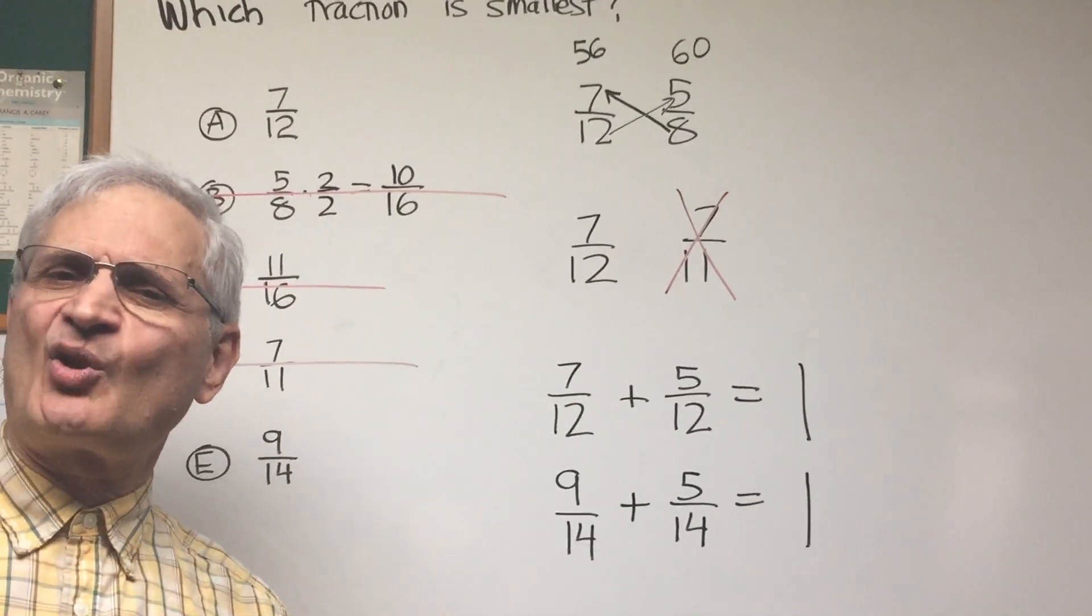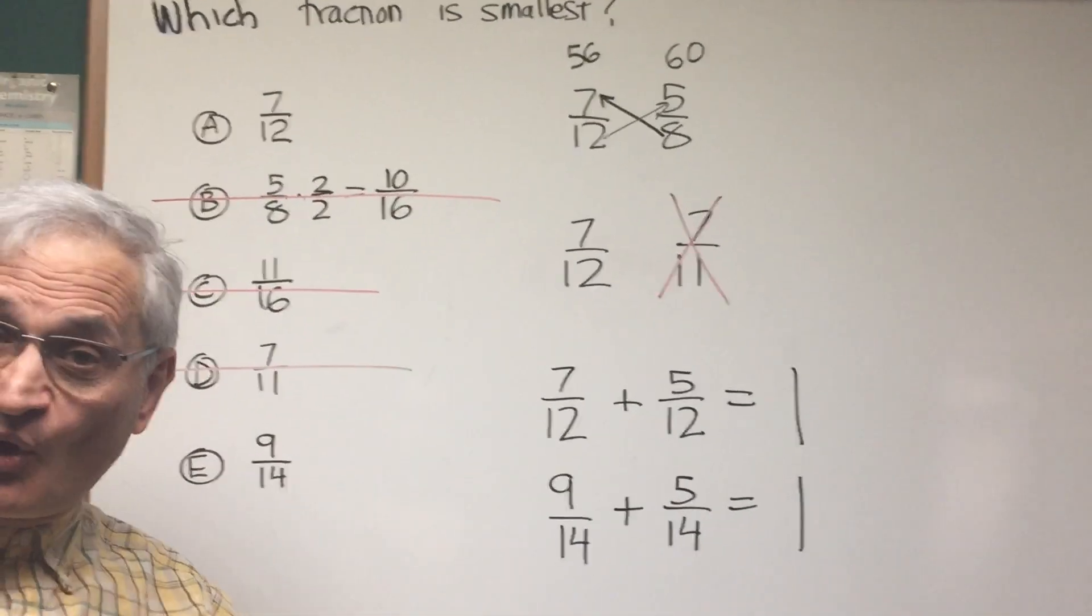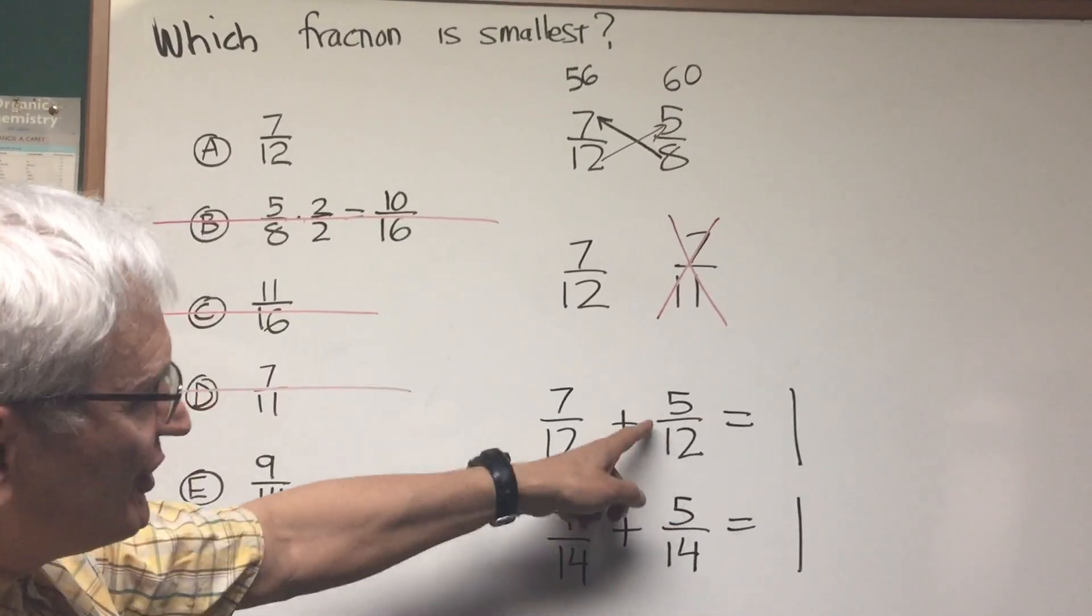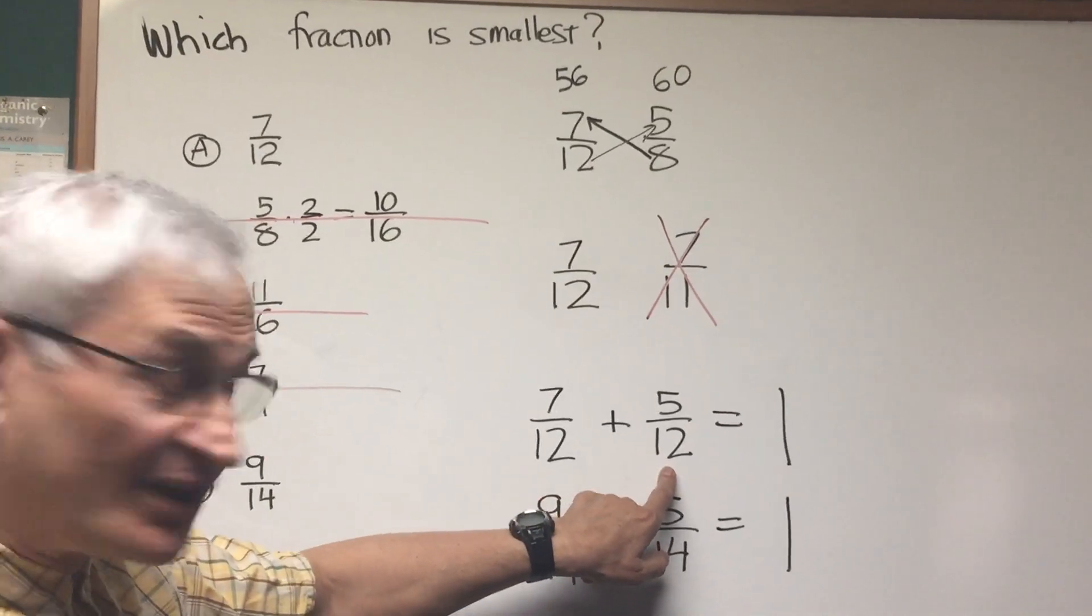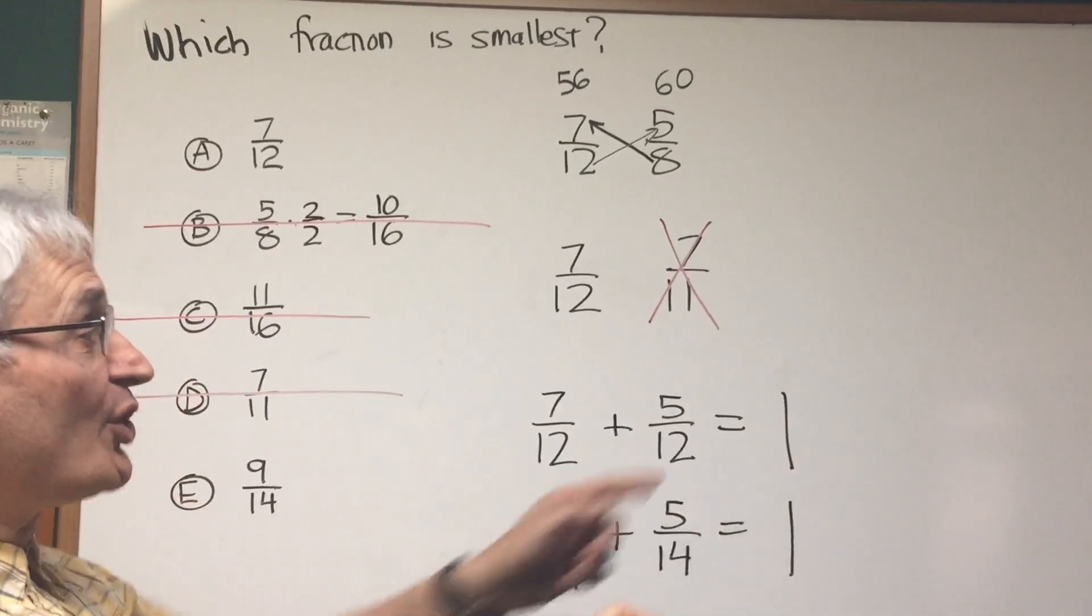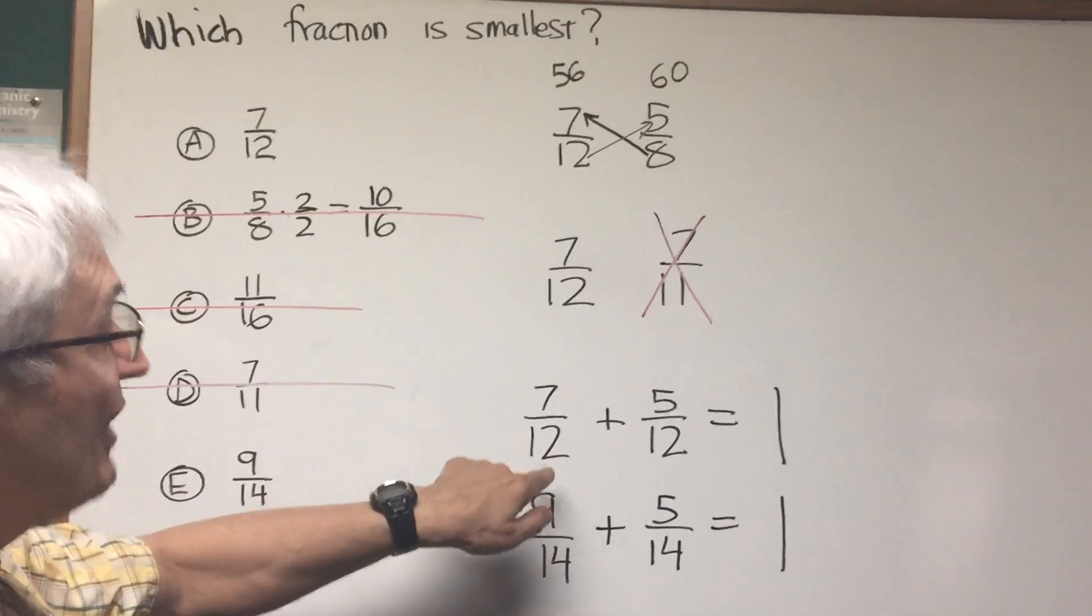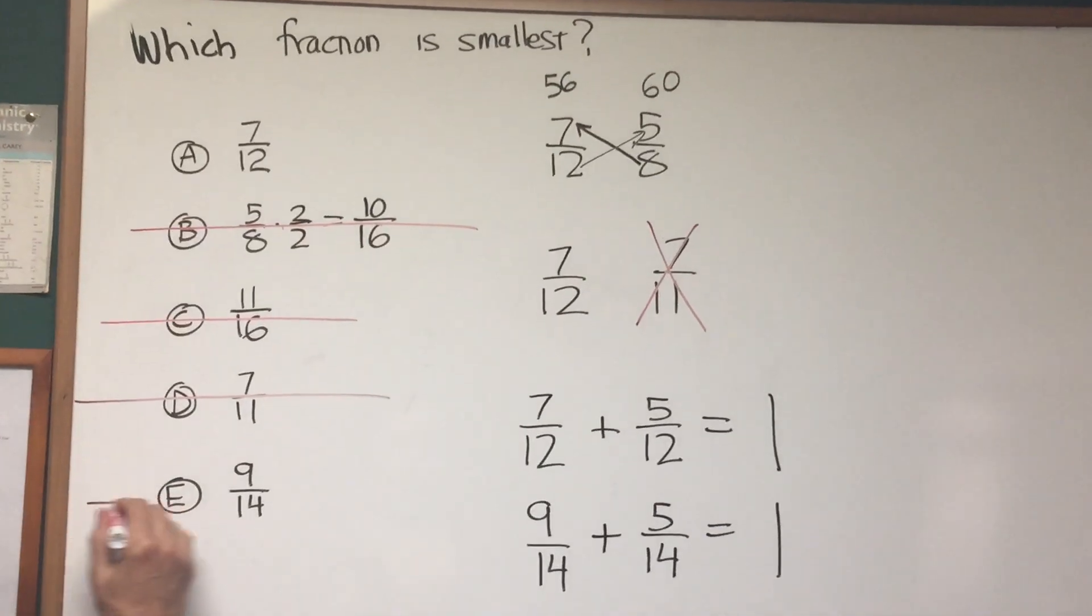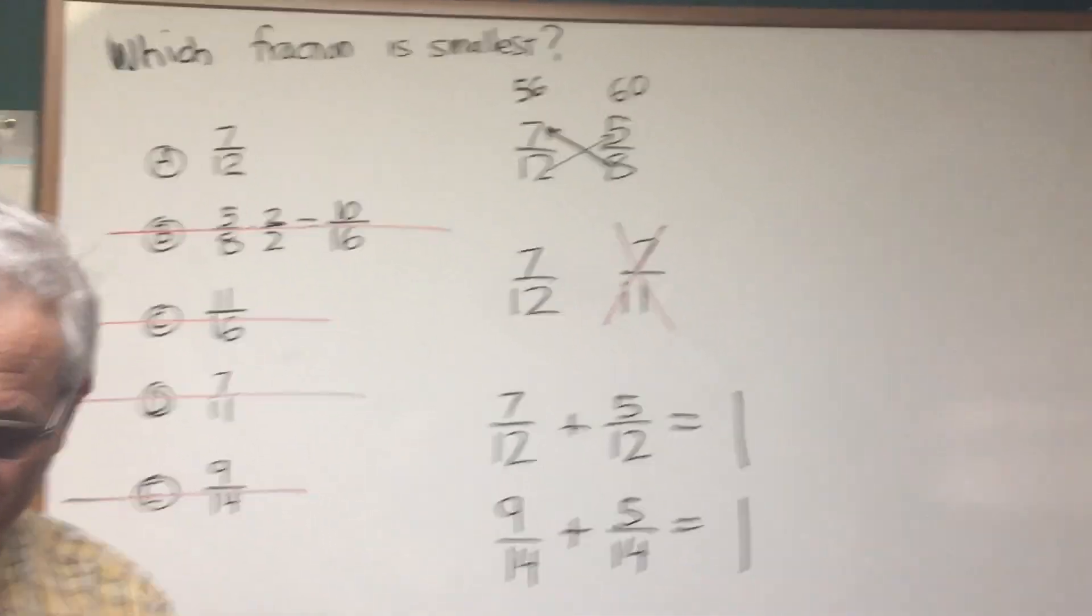This is the method that I call shortfall. So 5 twelfths and 5 fourteenths is the amount of shortfall from 1. Which one of these fractions is bigger? 5 twelfths or 5 fourteenths? 5 twelfths is bigger. So because 7 twelfths lies at a greater shortfall, it falls short of 1 by a greater amount than 9 fourteenths. That means 7 twelfths is the smaller of the two numbers. I can cross out 9 fourteenths. And there is my answer. The smallest fraction is 7 twelfths.